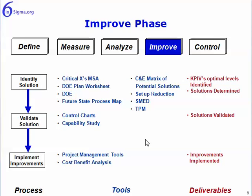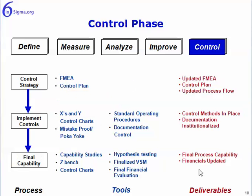In the Improve phase, we also have three steps: identifying the solution, validating it, and then implementing the improvements. Again, you've got the tools we would use and the deliverables. And then finally, in the Control phase: providing a control strategy, implementing the controls, and then determining the final process capability.